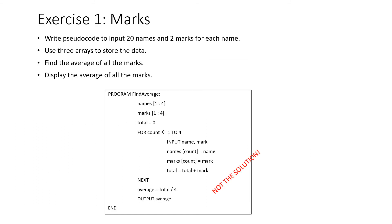It's your turn now. Write pseudocode to input 20 names and two marks for each name. Use three arrays to store the data, find the average of all the marks, and display it. You'll need a names array, a mark1 array, and a mark2 array. The previous solution is shown as an example — please pause the video now.